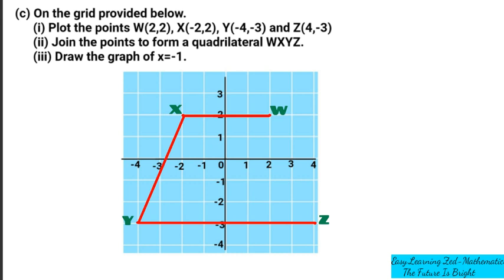Now we have drawn and formed a quadrilateral called W, X, Y, Z. So that's the quadrilateral — we have answered question 2. Now we go to question 3, which is draw the graph of X equals negative 1.